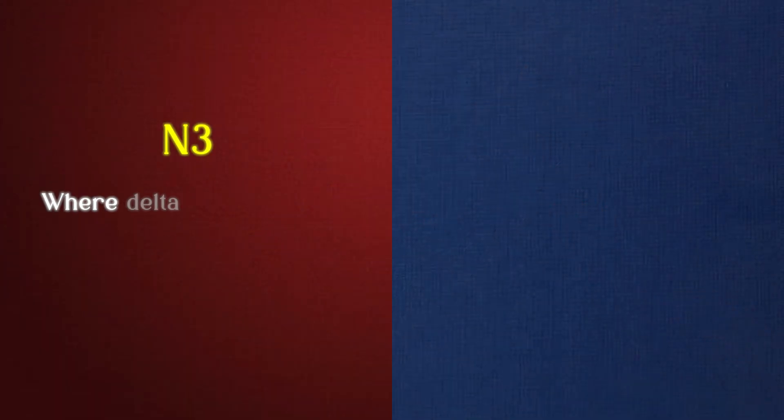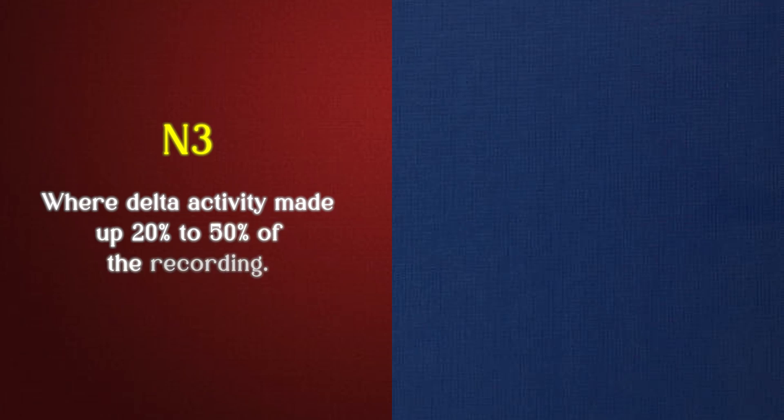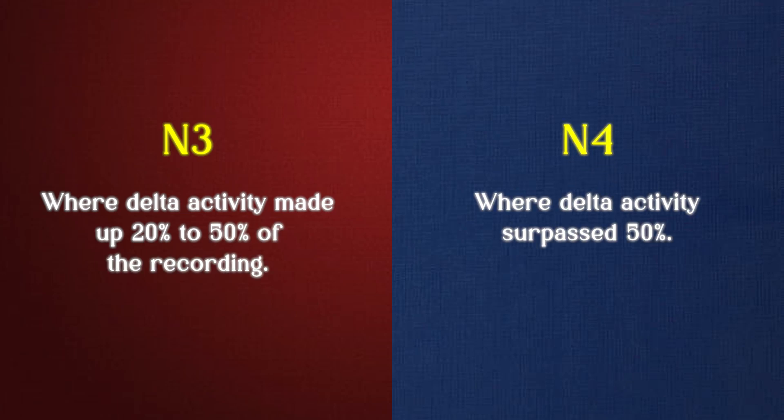Previously, this phase was divided into two separate stages: N3, where delta activity made up 20–50% of the recording, and N4, where delta activity surpassed 50%. However, modern sleep staging has combined these into a single stage, N3.